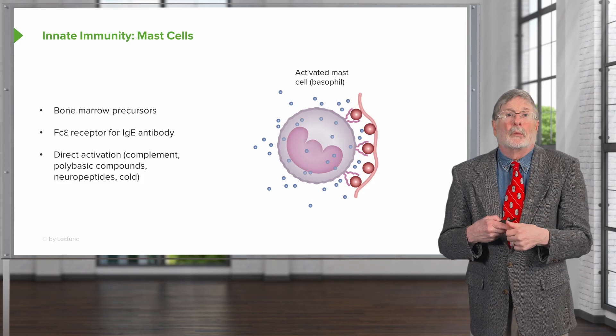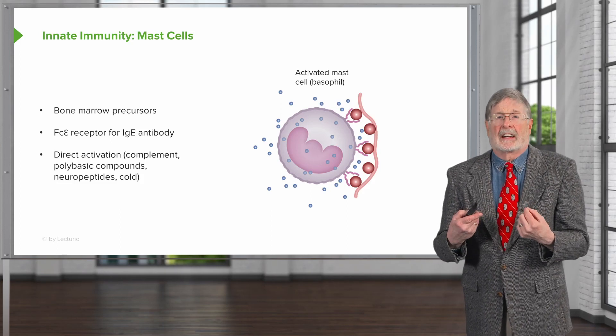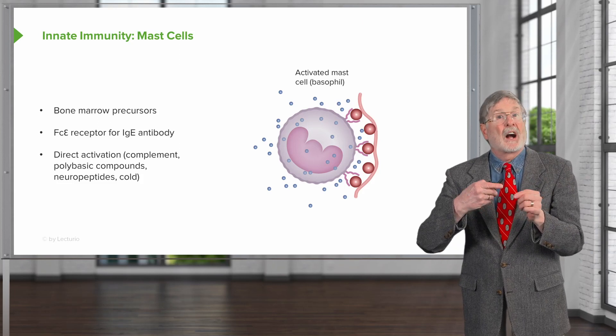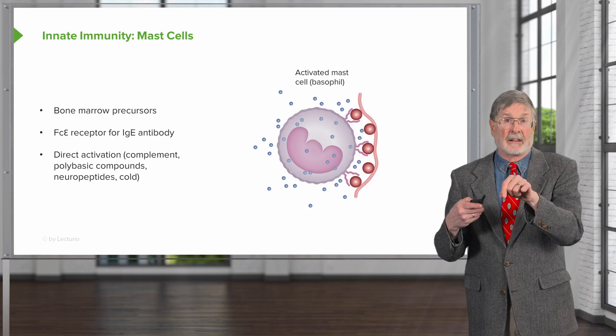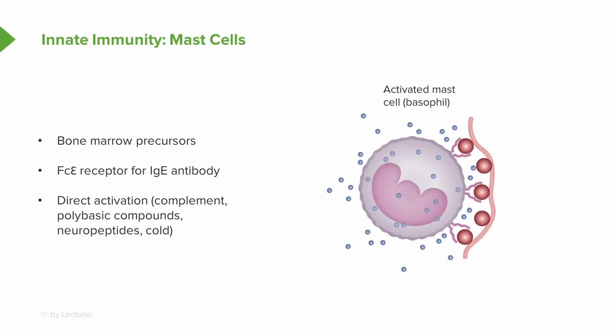There are other ways that we can activate mast cells through direct activation. It turns out that certain protein fragments coming from the complement activation cascade, as we'll talk about at the end of this series, can activate mast cells directly. Polybasic compounds — things that are present, for example, in bee venom — can also activate mast cells directly.